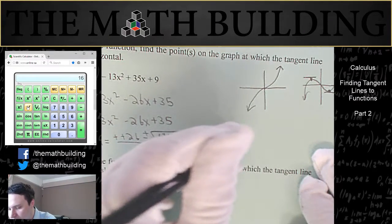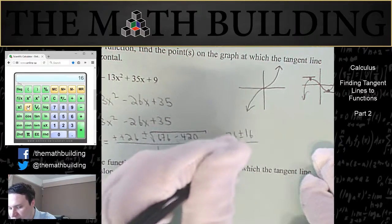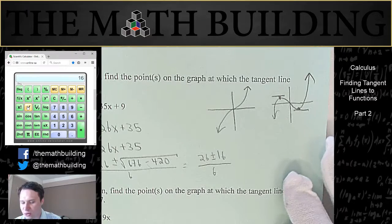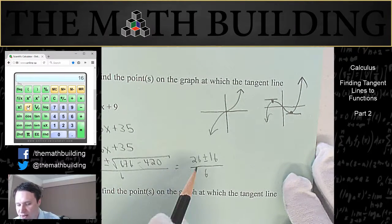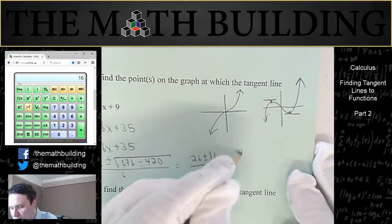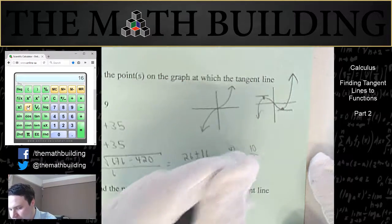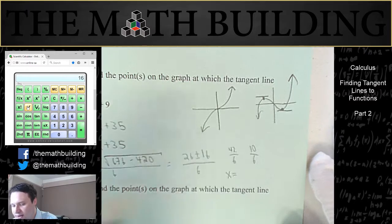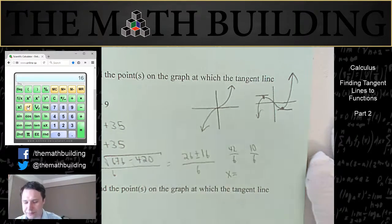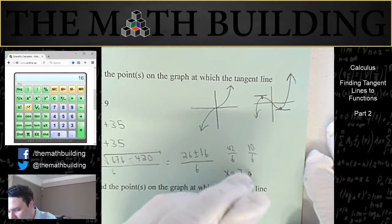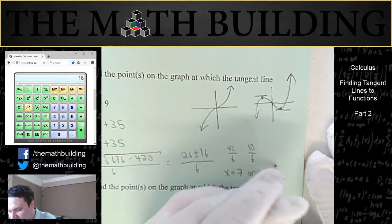So we get 26 plus or minus 16 divided by 2a. So that's pretty cool. Let's see what the two values would be. 26 plus 16 would be 42 over 6. And 26 minus 16 would be 10 over 6. So the two places where we're going to have horizontal tangent lines. 42 divided by 6 is 7. Or let's reduce that 5 over 3.